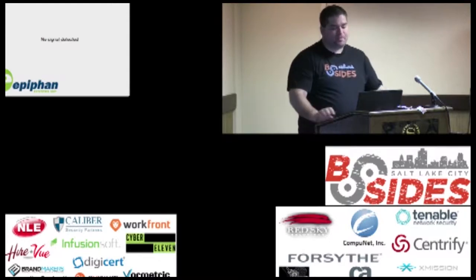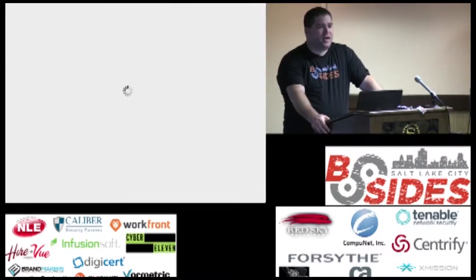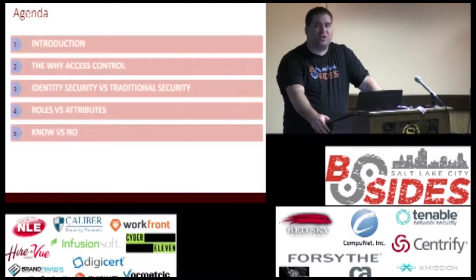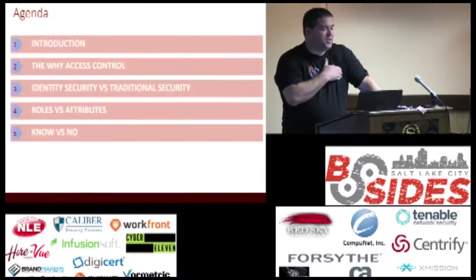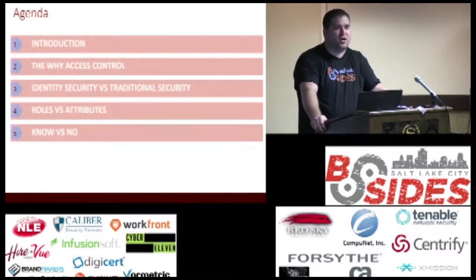What I want to cover is going to give us a background on why access control, a little bit on the history of what we see, how we got to where we are today, and some of the decisions that put us here. We're going to look at where it's going — the traditional security model and what it's going to take to move ahead in the new world of business. We'll look at the difference between roles and attributes, and especially how security has always taken a 'no' answer, but really we need more knowledge about who our users are and how they're interacting with our organization.